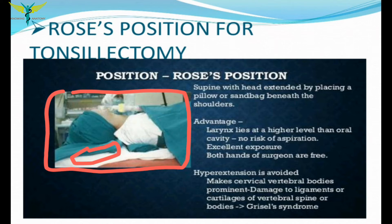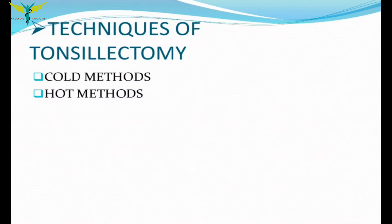The advantage of the Rose position is that the larynx lies at a higher level than the oral cavity, reducing the risk of aspiration. Extension of the neck provides excellent exposure of the tonsils and frees both hands of the surgeon. However, hyperextension must be avoided as it can damage the ligaments and cartilage of the vertebral spine and lead to Grizzle syndrome.